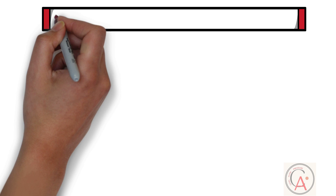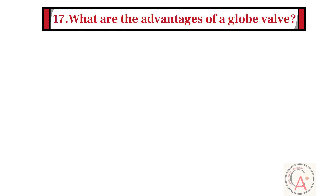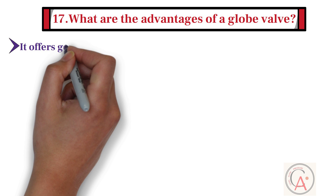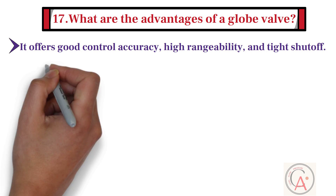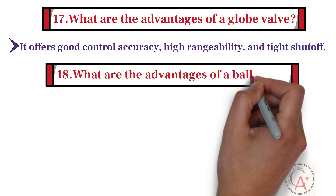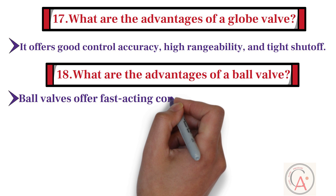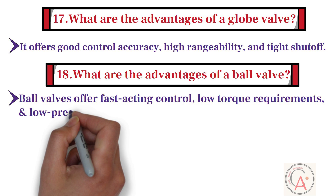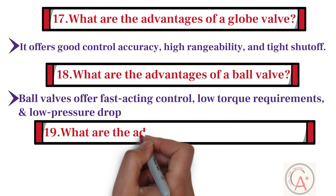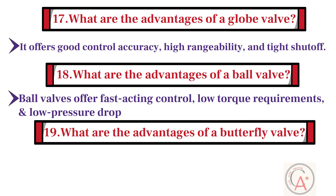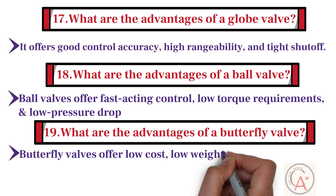What are the advantages of a globe valve? Globe valves offer good control accuracy, high rangeability, and tight shutoff. What are the advantages of a ball valve? Ball valves offer fast-acting control, low torque requirements, and low pressure drop. What are the advantages of a butterfly valve? Butterfly valves offer low cost, low weight, and low head loss.